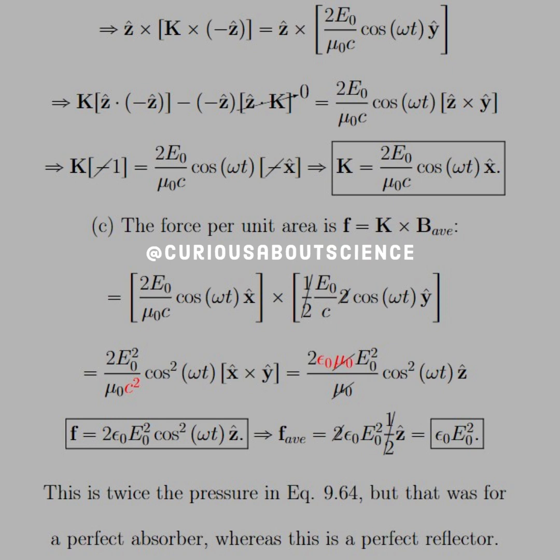So, we need to take K, which we just found, and the average, hence the one-half, canceling with the two, at z equals zero, and just plug it on through. We see that we get two copies of cosine omega t, so we get a square there. We have two e-naughts and two c's. So, we put all the constants out, and we're left with x cross y, which we know goes to z. c squared is actually equal to epsilon-naught mu-naught, so when we substitute it in, the mu-naughts cancel. So, we're actually left with a force per unit area of two epsilon-naught e-naught squared cosine squared omega t in the z-hat direction.